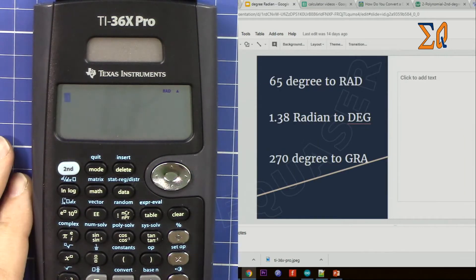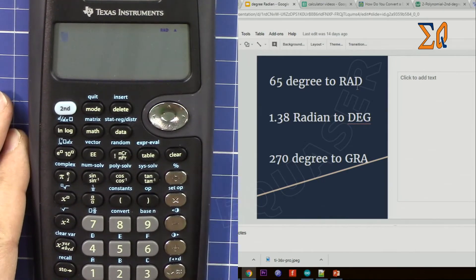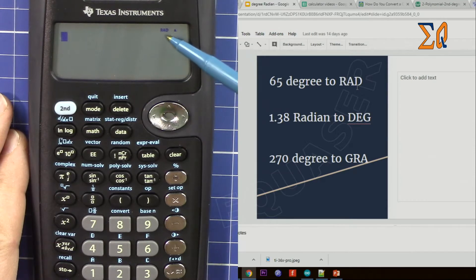Let's say you have an example question: 65 degrees to radian. The value that you want in radian, the calculator must be in radian mode. So now it's in radian. If you want to change the mode...